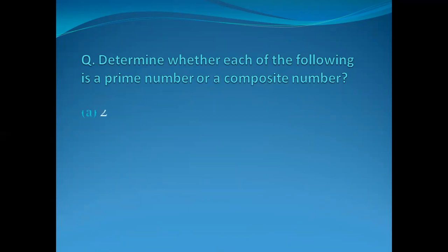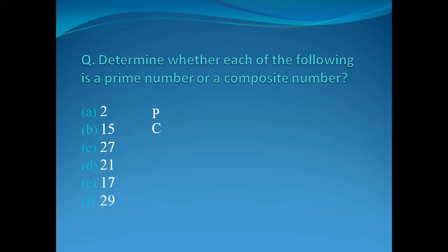Here we have to determine whether each of the following is a prime or composite number: 2, 15, 27, 21, 17, and 29. The number 2 is the only even prime number, having only two factors. 15, 27, and 21 are composite numbers as they have more than two factors. 17 and 29 are prime numbers.